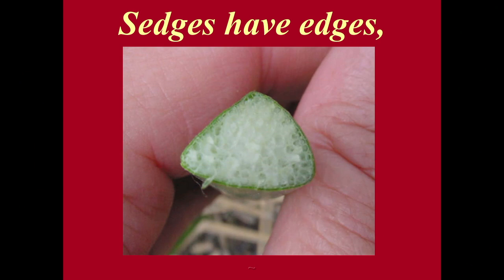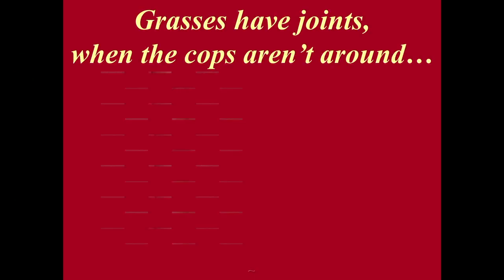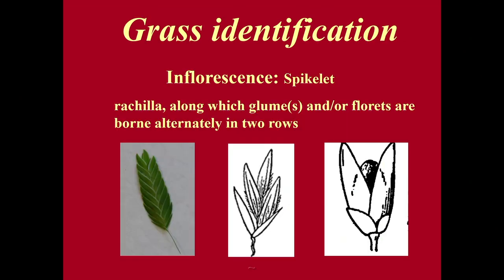There is a saying: sedges have edges, rushes are round, grasses have joints when the cops aren't around. But with changes in laws, this may not be needed to be said anymore, so we won't have a rhyme to go with it. For grass identification, the first and most important thing to remember is that grasses have spikelets.